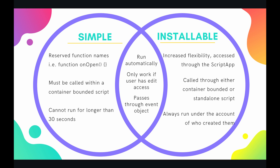Simple triggers are reserved function names. So if you declare a function and call it onOpen, this is a reserved function name — you cannot make this a custom function. This is going to specifically tell the script that onOpen means when a certain file is opened, say like a spreadsheet, it will run automatically. Do not start making your own custom functions and calling them onOpen or onEdit or something like that. It won't work.